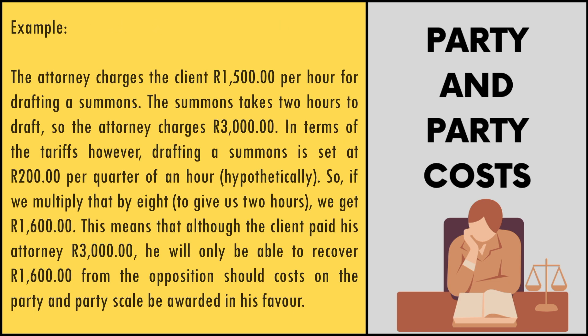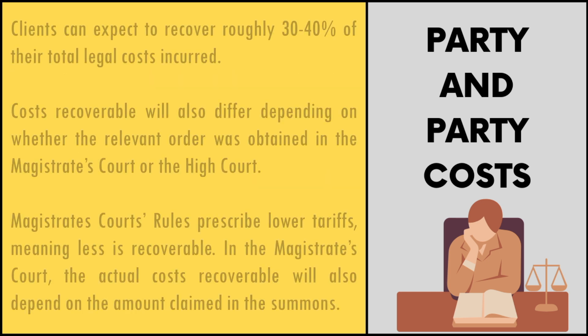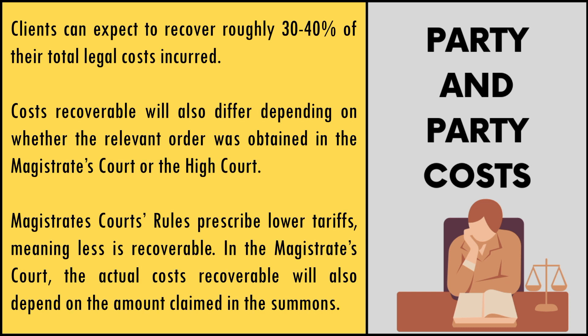A more detailed example: the attorney charges the client R1,500 per hour for drafting a summons. The summons takes two hours to draft, so the attorney charges R3,000. In terms of the tariffs, however, drafting a summons is set at R200 per quarter of an hour — hypothetically. Multiplied by 8 to give us two hours, we get R1,600. This means that although the client paid R3,000, he will only be able to recover R1,600 from the opposition should costs on the party and party scale be awarded in his favour. On the party and party scale, clients can expect to recover roughly 30–40% of their total legal costs incurred.